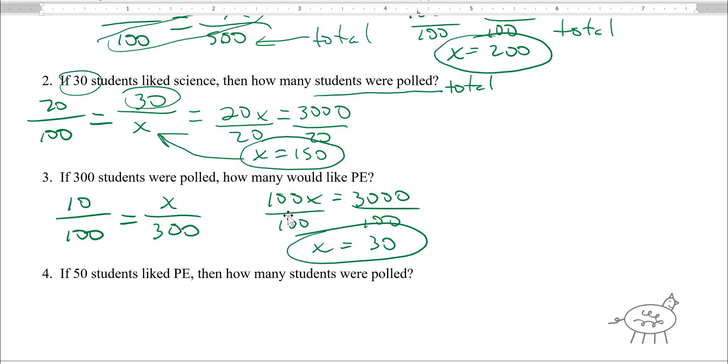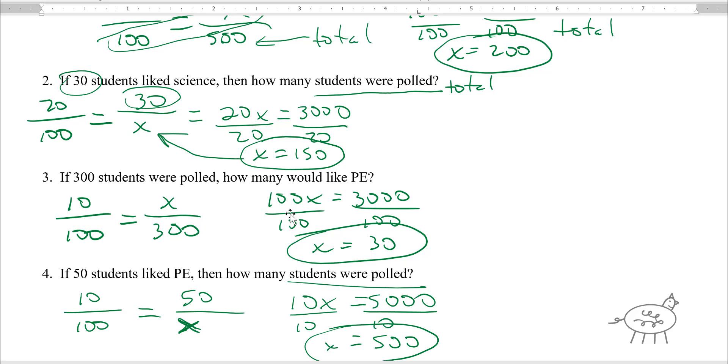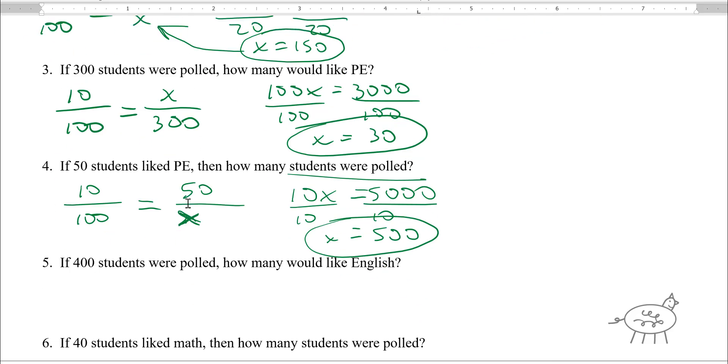This is another PE question. Now it says 50 like PE, but I'm still going to use the 10 over 100. 50 is on top. How many students were polled? That's my total, so we're going to call that x. So we cross multiply, 10x equals 5,000 divided by 10, x equals 500.